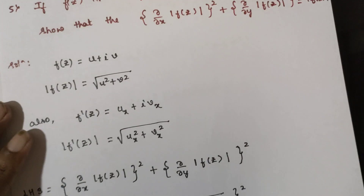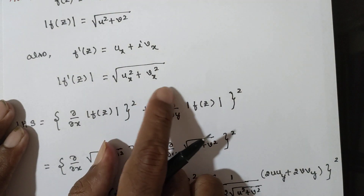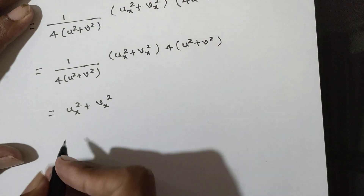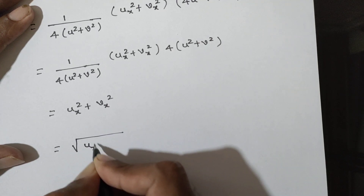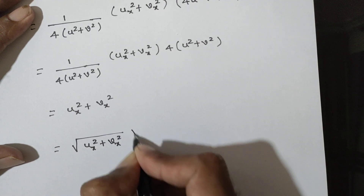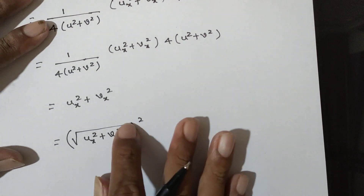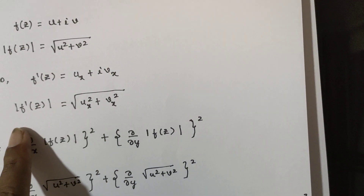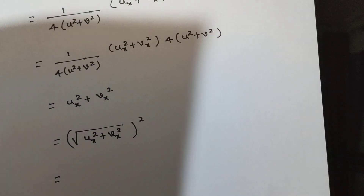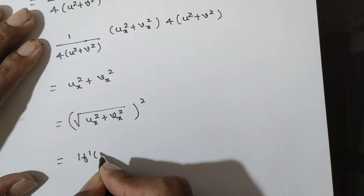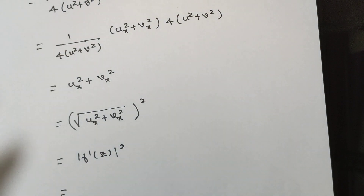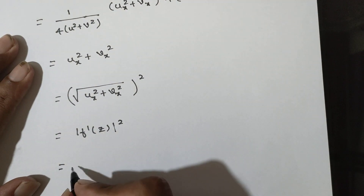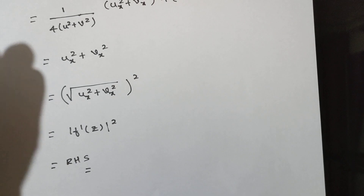The root of u square plus v square equals f dash of z, and magnitude of f dash of z whole square. So LHS equals RHS. Thank you.